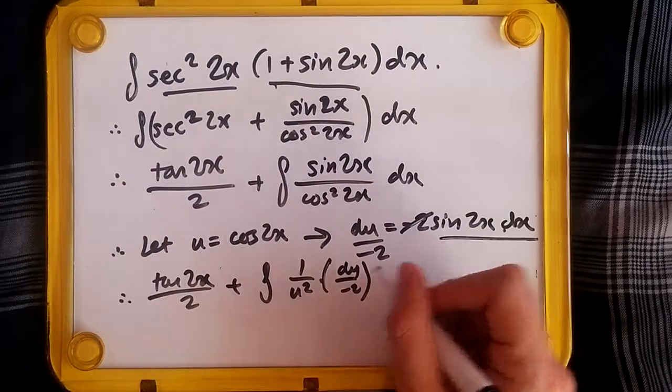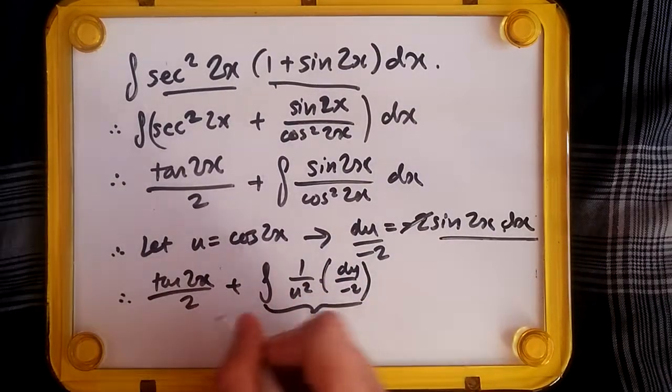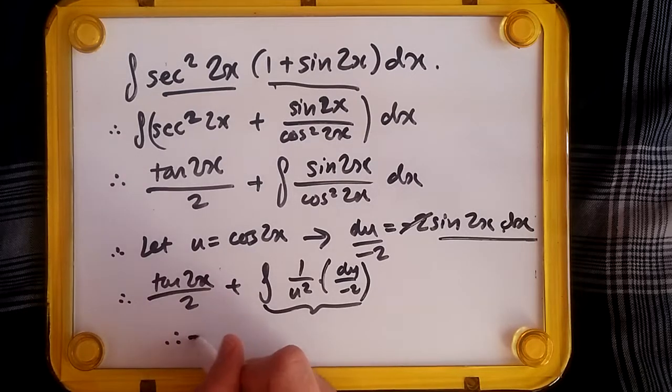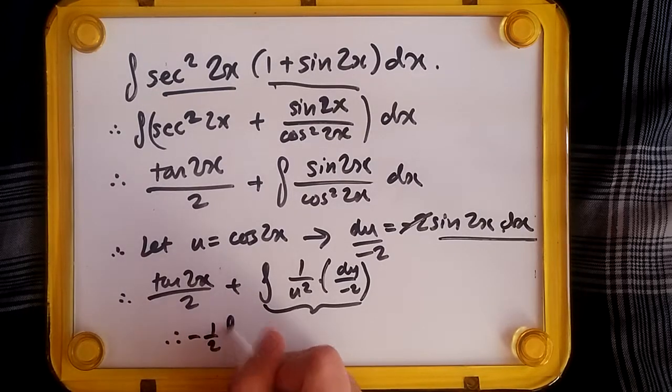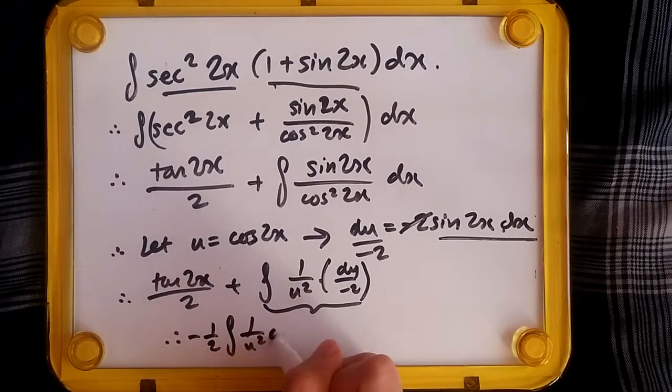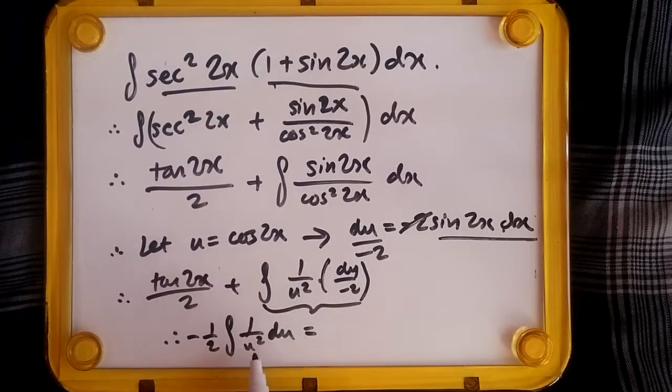du, which is the same as u^(-2). Raising the power gives us 1 over u times another minus sign, which gives us 1/2 times 1/u plus c.